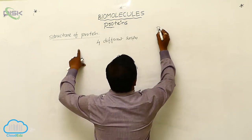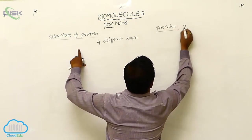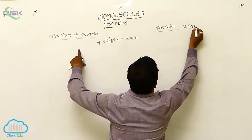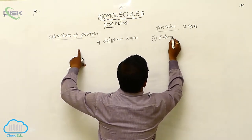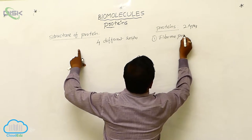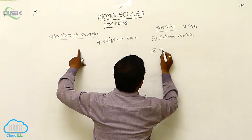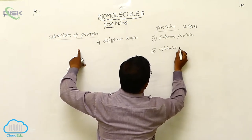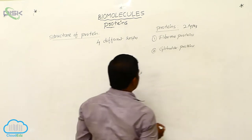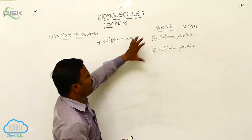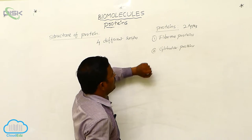Protein molecules are classified into two types: number one, fibrous proteins, and number two, globular proteins. Before explaining the structure of proteins, we have to know the types of proteins available in living organisms.